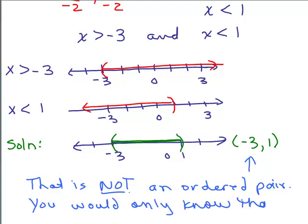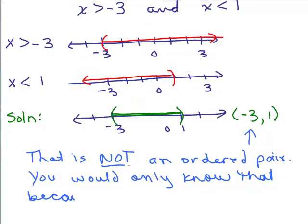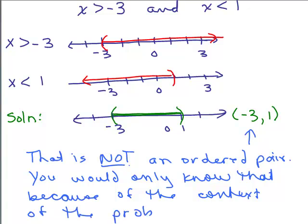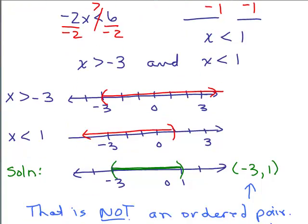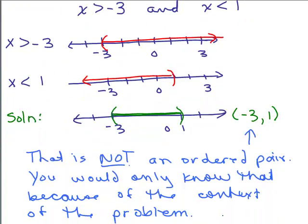Make sure you understand that that's not an ordered pair. It looks like an ordered pair, but we're looking for a solution in interval notation. You would only know because of the context of the problem — if somebody writes parenthesis negative 3 comma 1 parenthesis and says 'what is this?', well, you don't really know if it's an ordered pair or an interval notation solution. But we're doing a problem that said 'solve', so that's how we know. It's all in context — just like the word R-E-A-D can be pronounced 'read' or 'red' depending on the sentence.